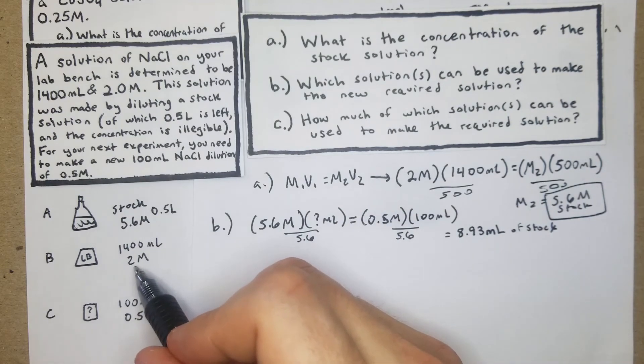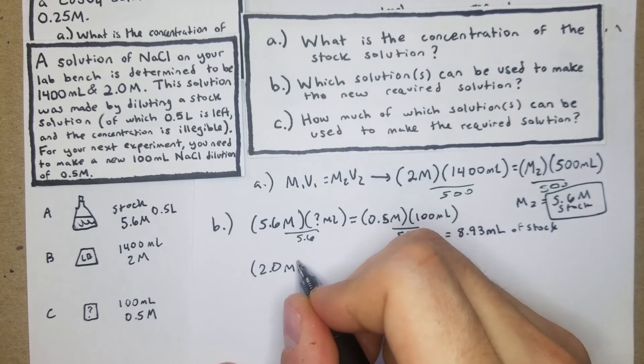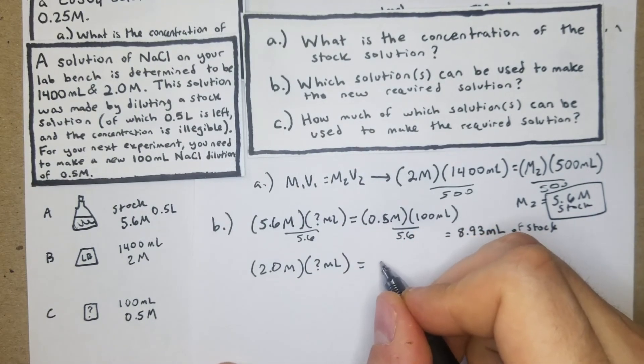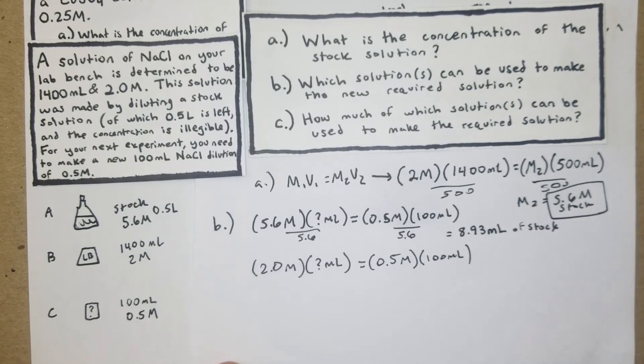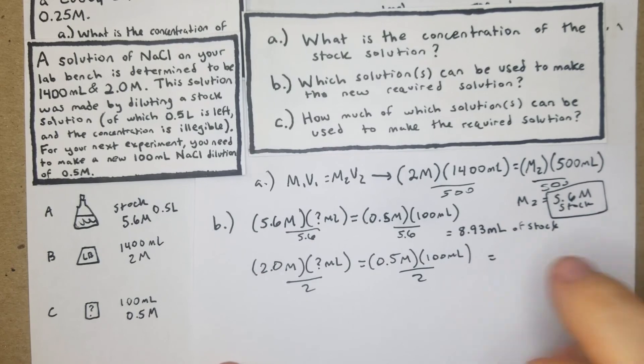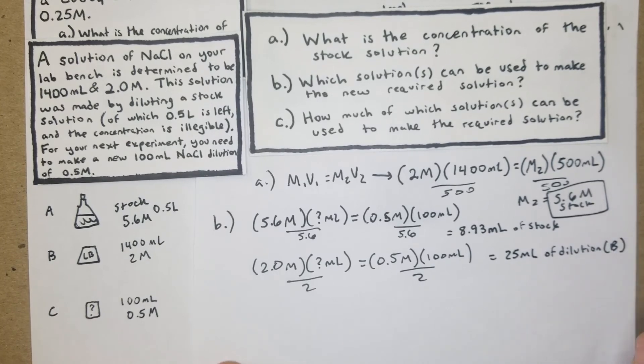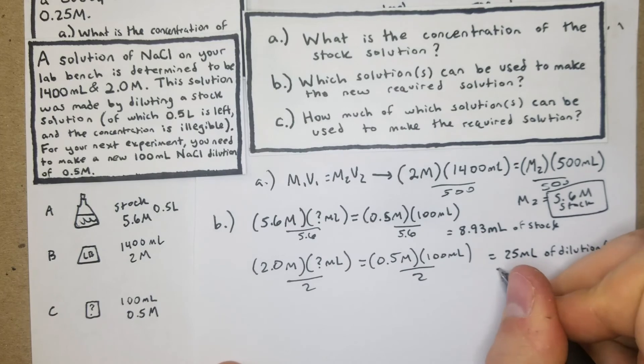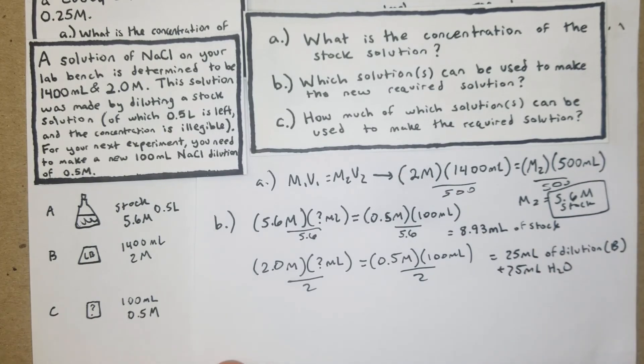Now we're going to use the lab bench dilution that we had that was made. We'll see how that one pans out. So we have 2.0 molar is going to equal 0.5 M and 100 mL. We're going to have the 50, and then this time we're going to divide both sides by 2. And that's going to just be 25 mL of the dilution, plus 75 mL of water. And then in this case we're going to have 100, so 100 minus 8.93 is 91.07.